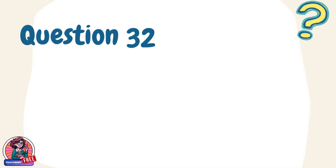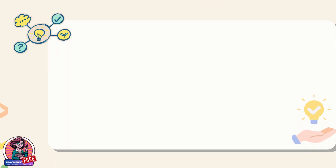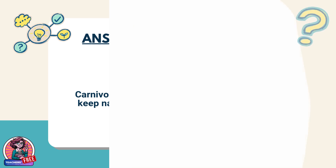Question 32. What do you call animals that eat only meat? Answer: Carnivores. Carnivores feed on other animals and help keep nature's balance by controlling prey numbers.